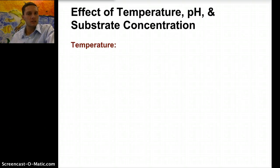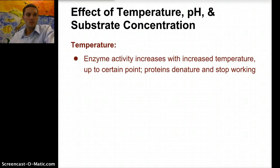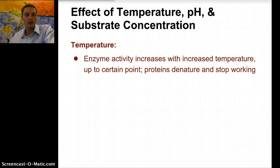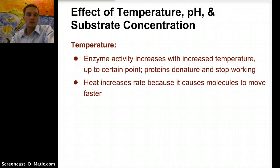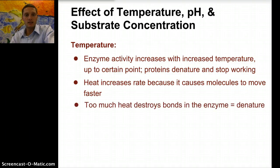There are a number of conditions that can affect enzymes — we're going to look at three: temperature, pH, and substrate concentration. Enzyme activity increases with increased temperature, but only up to a specific temperature level. At a certain point, if it gets too hot, those proteins are going to denature or break down and stop working. There's an optimum range where the enzyme is most effective. Heat increases rate because it causes molecules to move around faster, but too much heat destroys the bonds of the enzyme and denatures it.